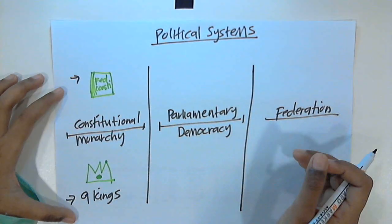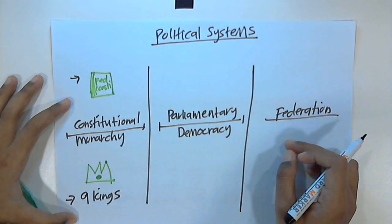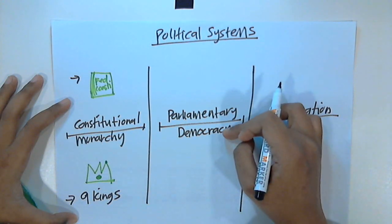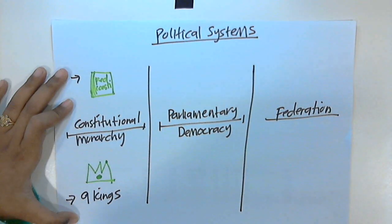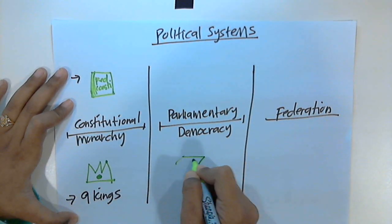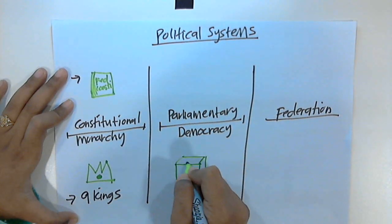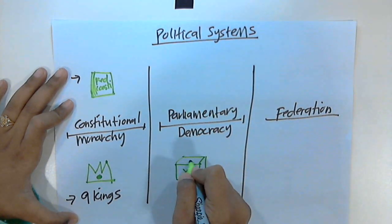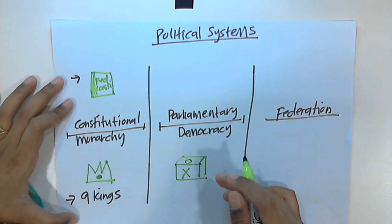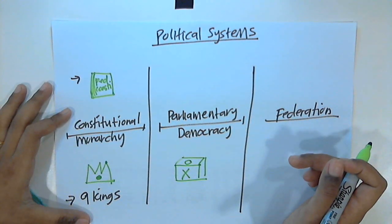Moving to the second concept: parliamentary democracy. Like constitutional monarchy, parliamentary democracy comes from two words — democracy and parliament. Democracy is normally represented by the election. It is impossible for a country to be democratic if there is no election. This is a ballot box representing democracy.